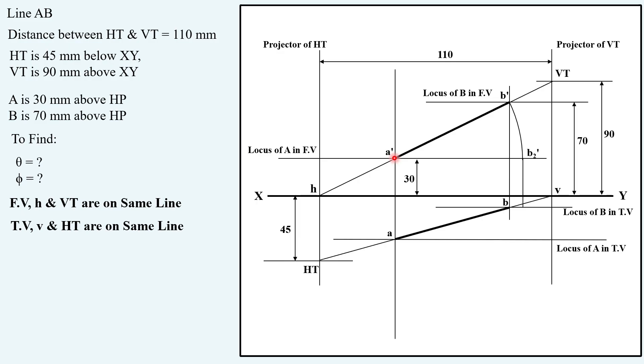And then projecting it down onto another locus of endpoint B that is locus of B in top view. Besides B you have a point B2 and if you join this B2 with A you will find your true length. You have found your true length.